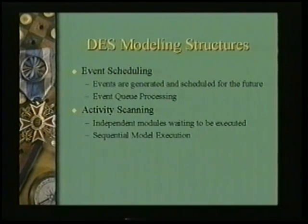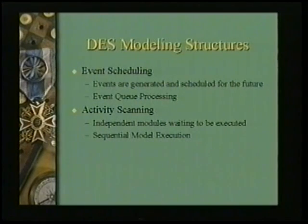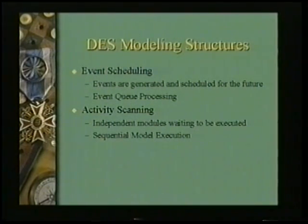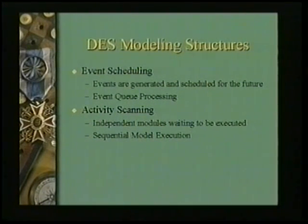The second structure is activity scanning. The simulation engine receives events but doesn't queue them — instead it immediately gives them to the object or function supposed to handle them. During its execution phase, it runs through a list of objects and asks each one if it has any events that need to execute right now. An object may execute ten different events it's holding. The focus on where events get held and executed is different from event scheduling.